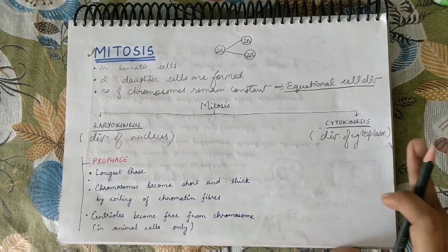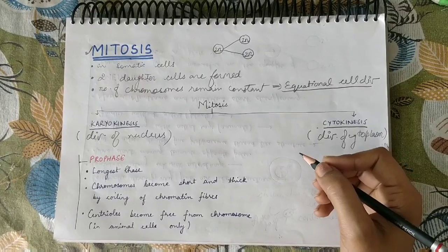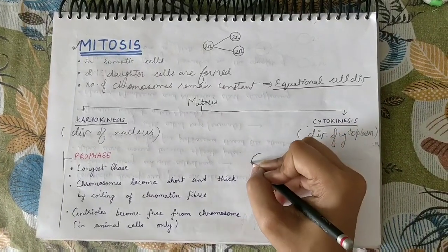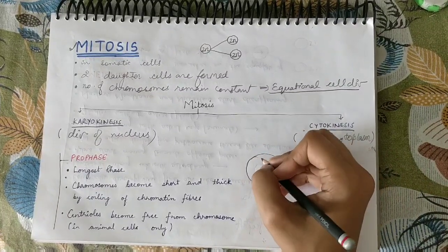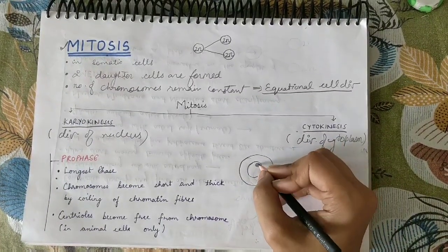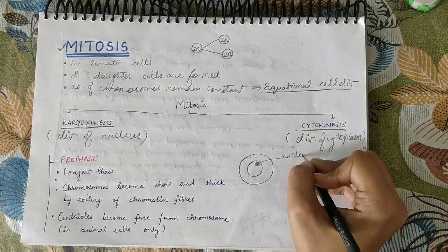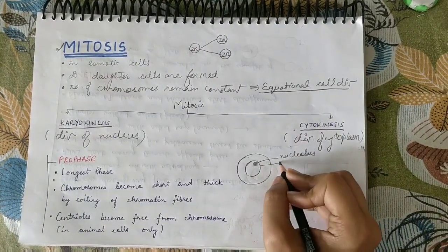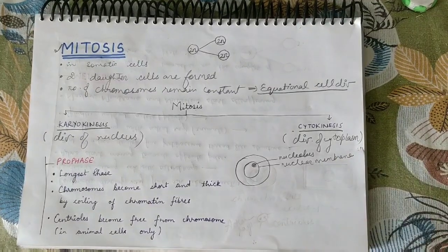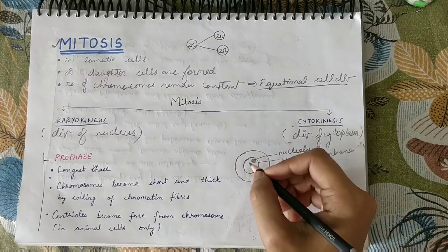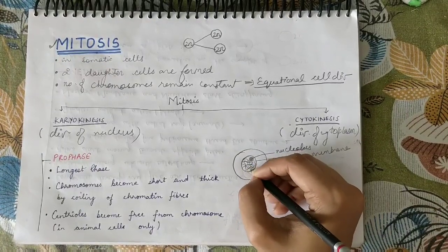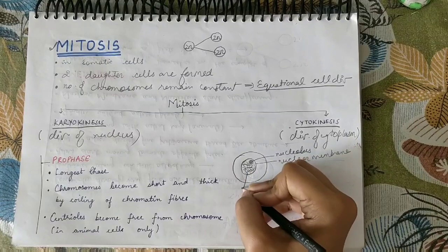There are differences between plant and animal cell division. Animal cells are round or oval in shape, with a nucleus in the center. Inside the nucleus there is a dense material known as the nucleolus, and a fine network of threads known as chromatin reticulum.